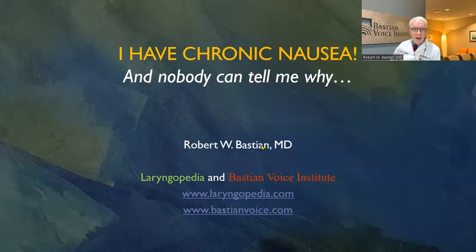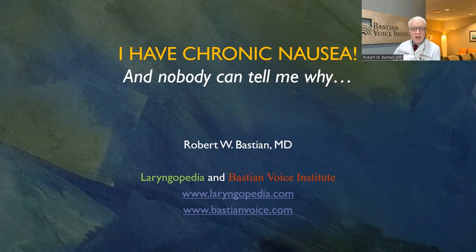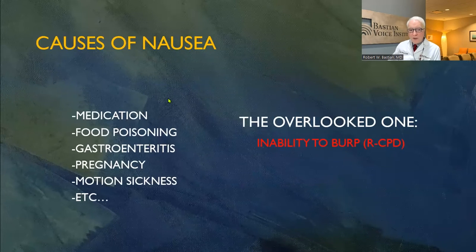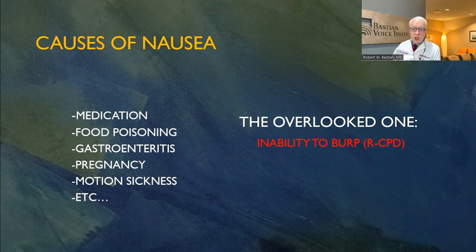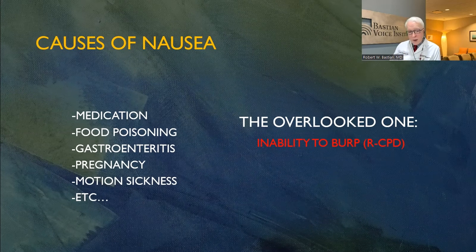There are people who have chronic nausea and nobody can tell them why. They've been to physicians, they've done testing, and they're left with this problem of nausea — nobody can explain it. There are a lot of causes of nausea: medication, food poisoning, a GI bug, gastroenteritis, pregnancy, motion sickness, and other things. But sometimes people go through that list and still don't have an explanation.